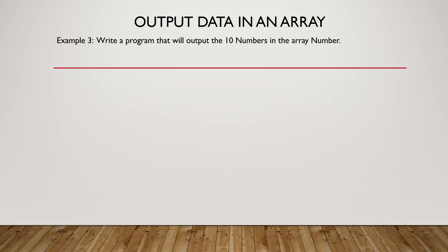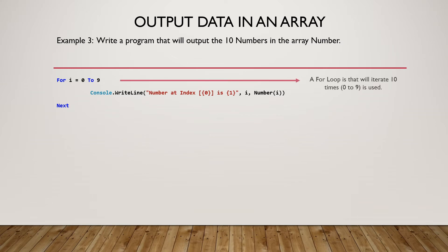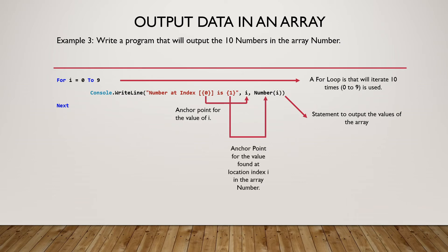Output data in an array — Example 3: write a program that will output the 10 numbers in the array. We will have a For loop that iterates 10 times from 0 to 9, with a statement to output the values of the array. It should be noted that the statement has two anchor points: the first for the value of i, and the second for the value found at that index location in the array 'number'.